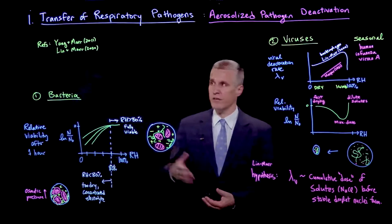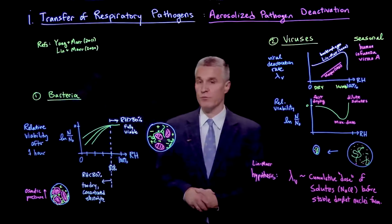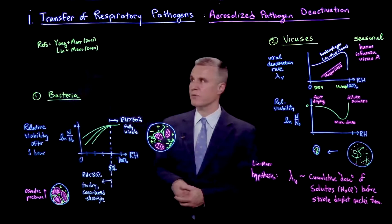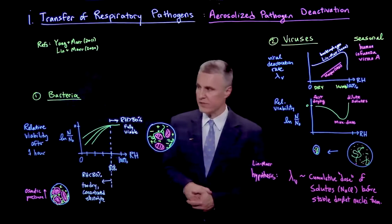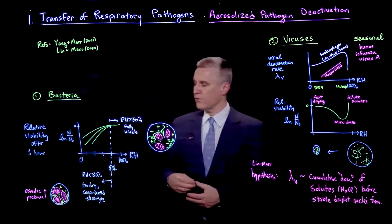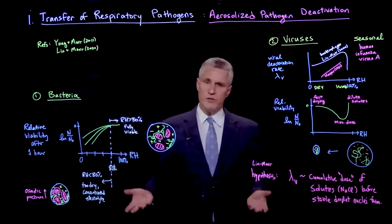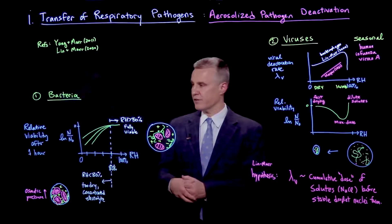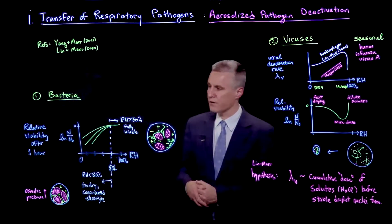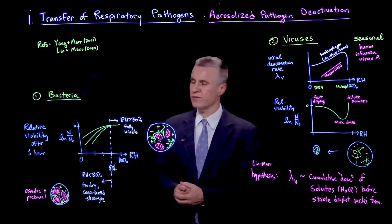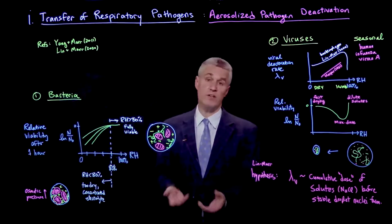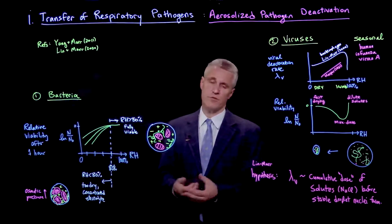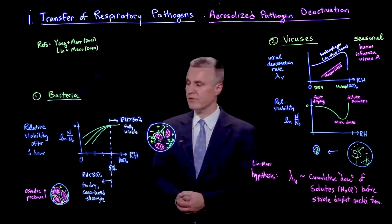I'm relying here on the recent work of the group of Lindsey Marr, two papers cited here. We can distinguish between two different types of pathogens. The first are the bacteria. Here, there's a monotonic dependence of the relative viability of the pathogen — of the bacteria — after a certain time period, let's say one hour.